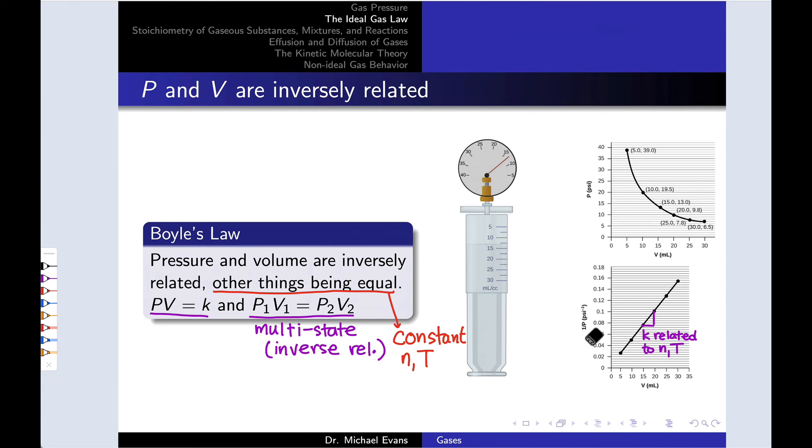If we plot one over the pressure as a function of the volume, we end up with a straight line suggesting this inverse relationship. And the slope of that line is this constant of proportionality. As we've seen, that's related to the number of moles of gas in the setup and the temperature.